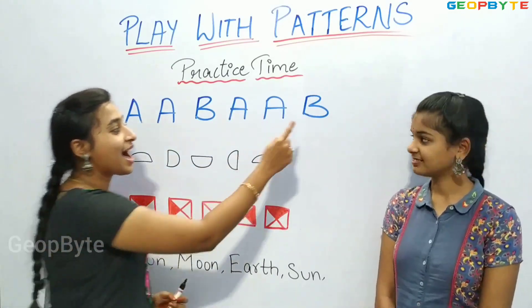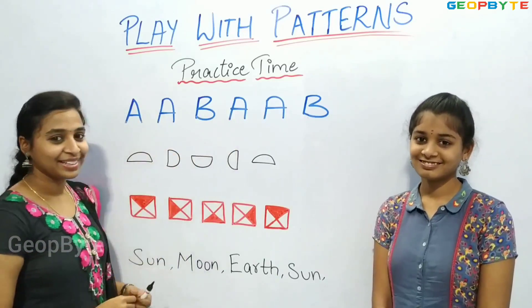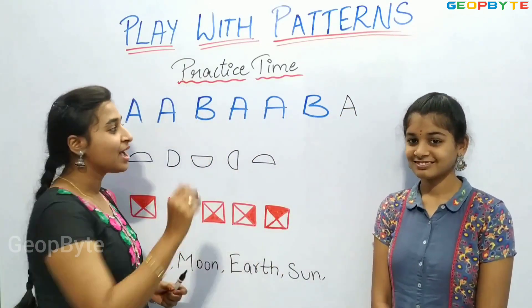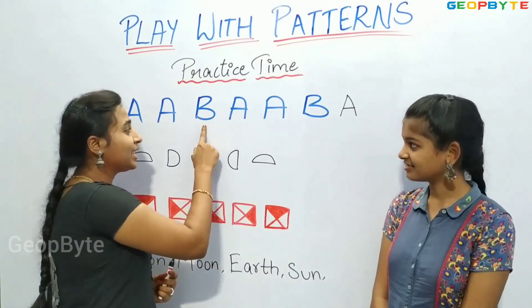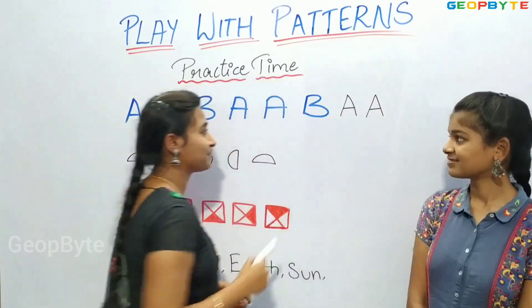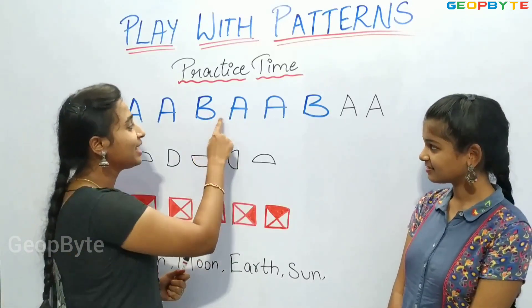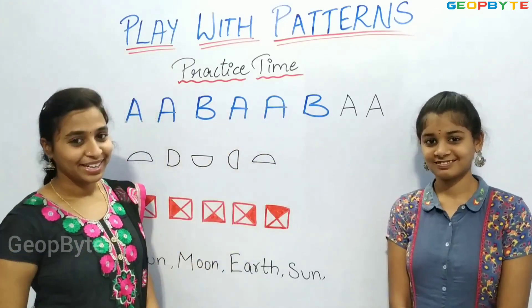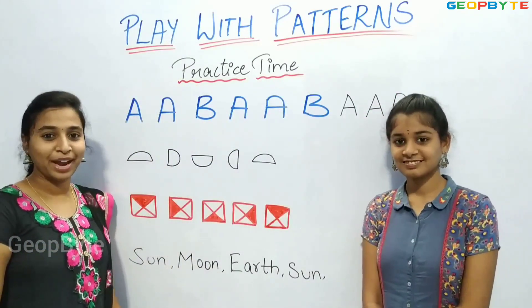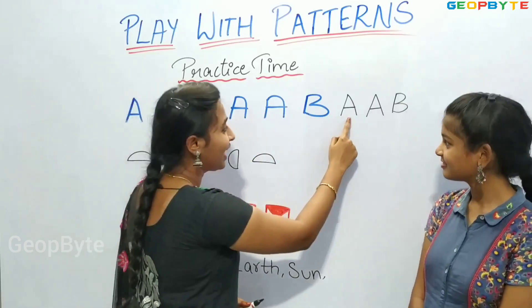Children, you say after B, which letter will come? After B, we have A. So let us write A. After B and A, which will come? A. Let us write A. Again, after A, which letter will come? B. Let us write B. A, A, B. Children, we have completed the pattern: A, A, B. A, A, B. A, A, B.